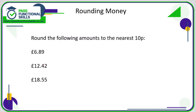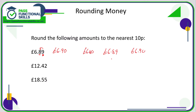If we're rounding to the nearest 10p, look at the digit to the right of the 10p column — the second decimal place. If it's five or more, the 10p digit rounds up; if it's less than five, it stays the same. For £6.89, the second decimal digit is 9, which is greater than five, so the 8 rounds up to 9: that gives £6.90. Alternatively, £6.89 is between £6.80 and £6.90 — it's clearly nearer £6.90.